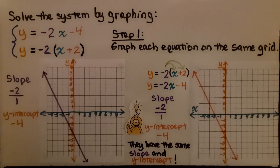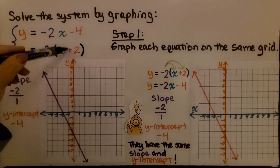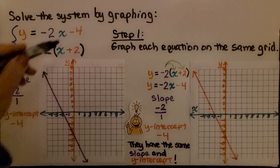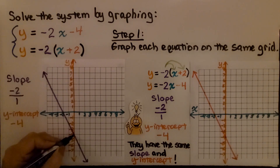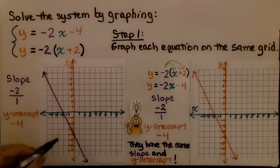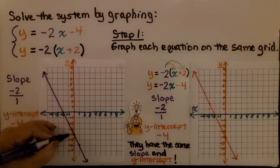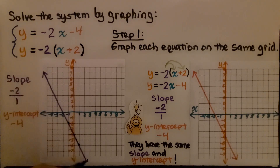Here again we solve the system by graphing. We have y = -2x - 4 and y = -2(x + 2). We graph each equation on the same grid. For the first equation, the slope is negative 2 over 1 and the y-intercept is negative 4, so the line crosses the y-axis at -4 and falls to the right — going down 2 and across 1 each time. We connect the points with a straight edge.